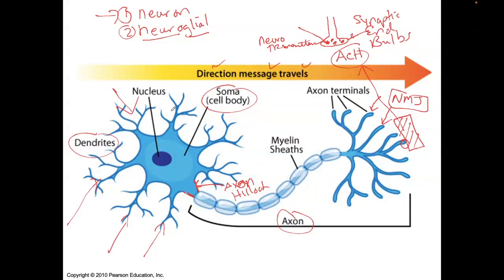Again, the main parts: dendrites, cell body, axon, axon terminal, and at the very end, the synaptic end bulbs.